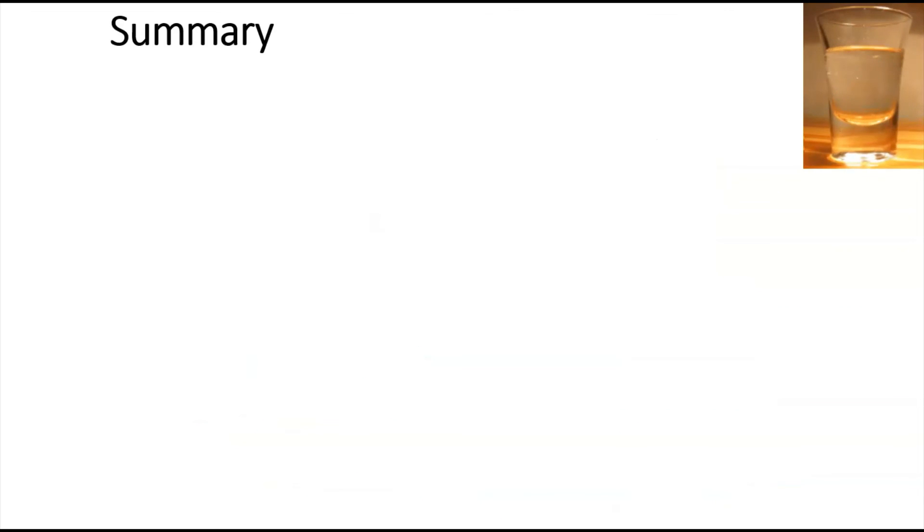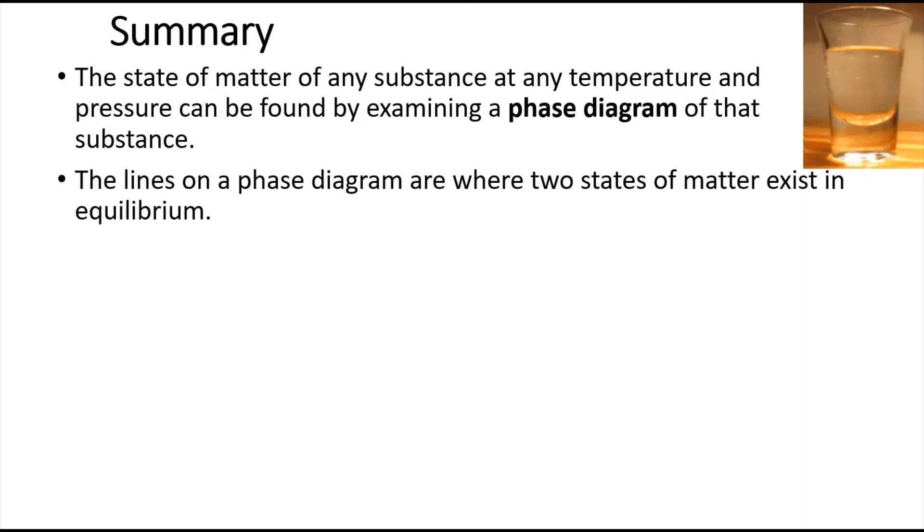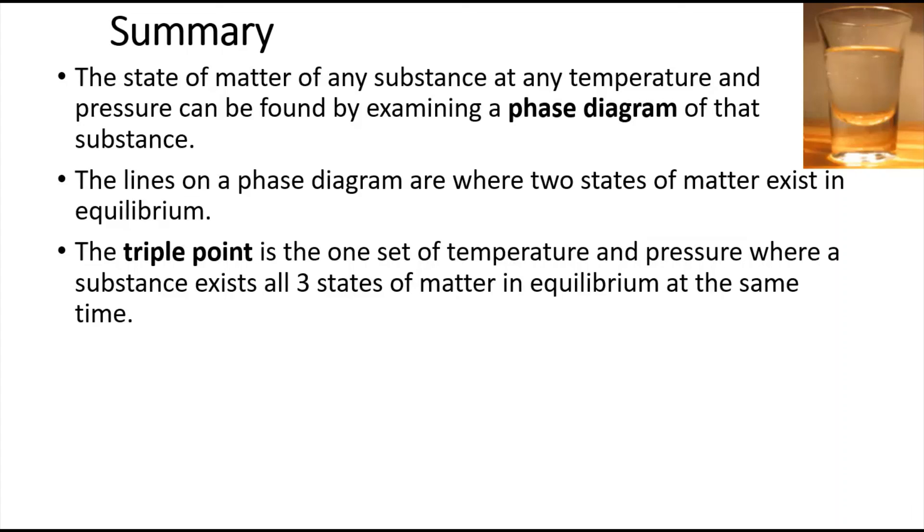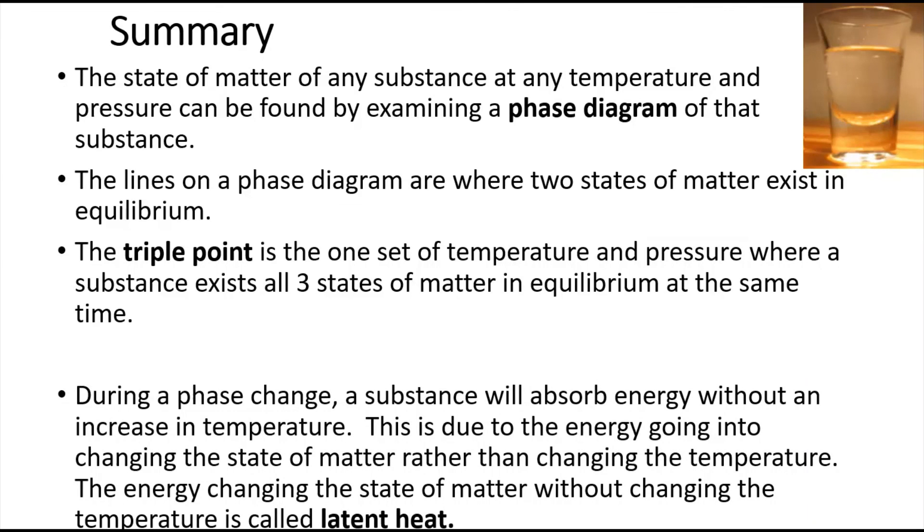All right, so to summarize, the state of matter of any substance at any temperature and pressure can be found by examining the phase diagram of that substance. The lines on the phase diagram are where two states of matter exist in equilibrium. I'd love to have that on standardized tests, by the way. The triple point is the one set of temperature and pressure where a substance exists in all three states of matter in equilibrium at the same time. That's also a favorite on tests. And then lastly about that last curve, during a phase change, a substance will absorb energy without an increase in temperature. This is due to the energy going into changing the state of matter rather than changing the temperature. The energy changing the state of matter without changing the temperature is called latent heat. And that is it.